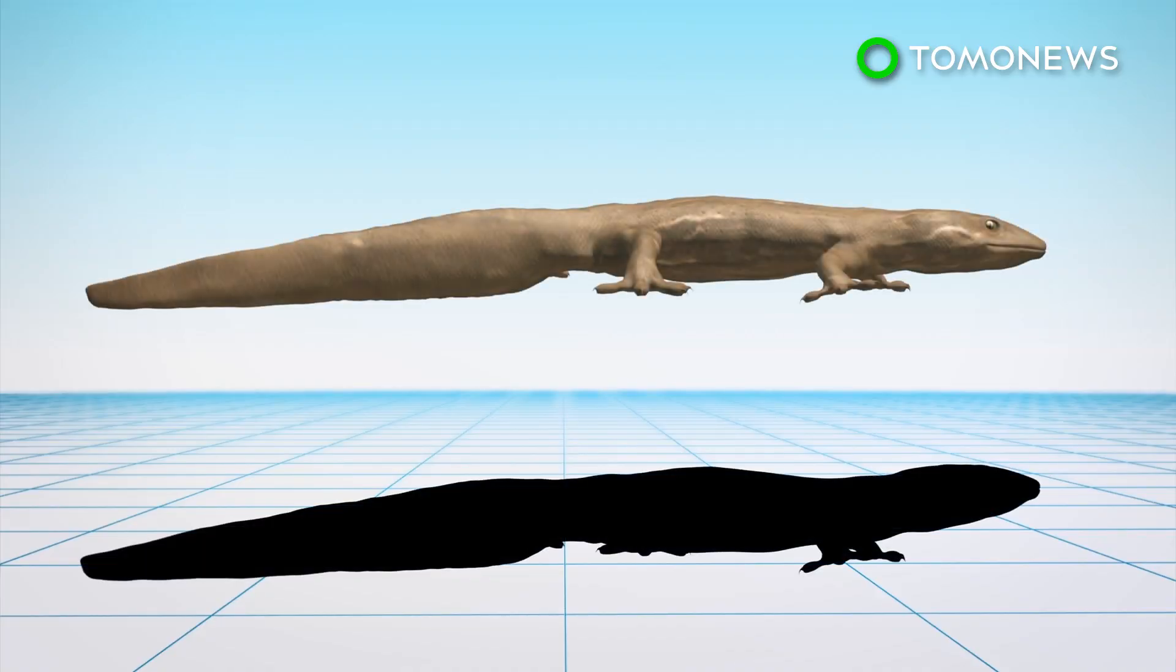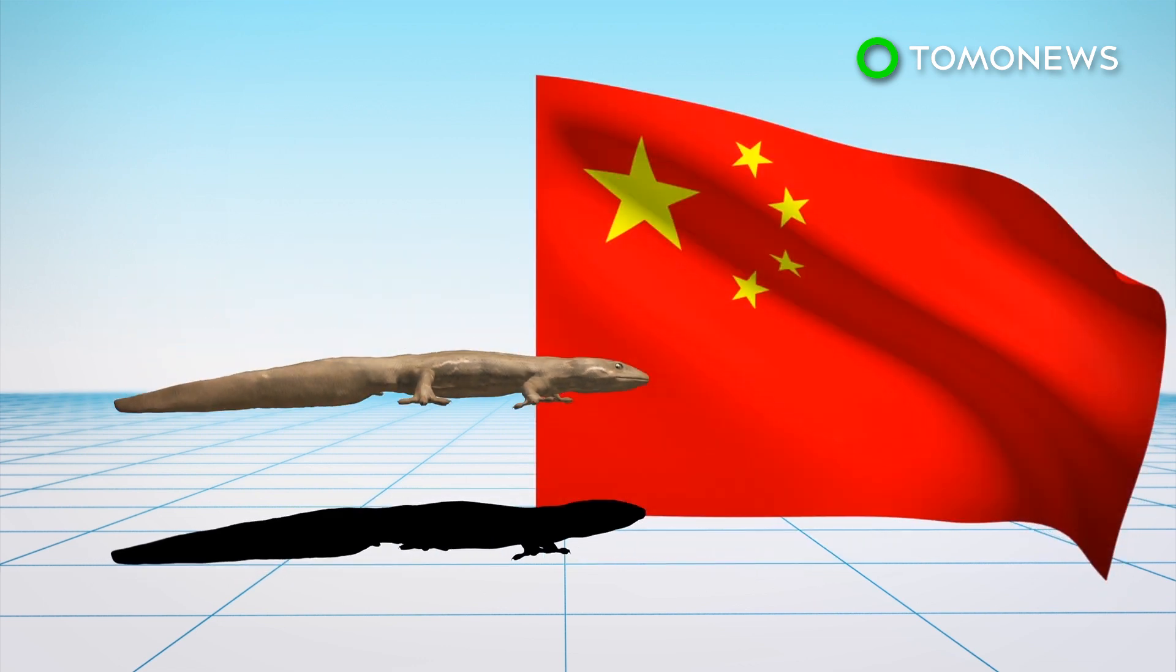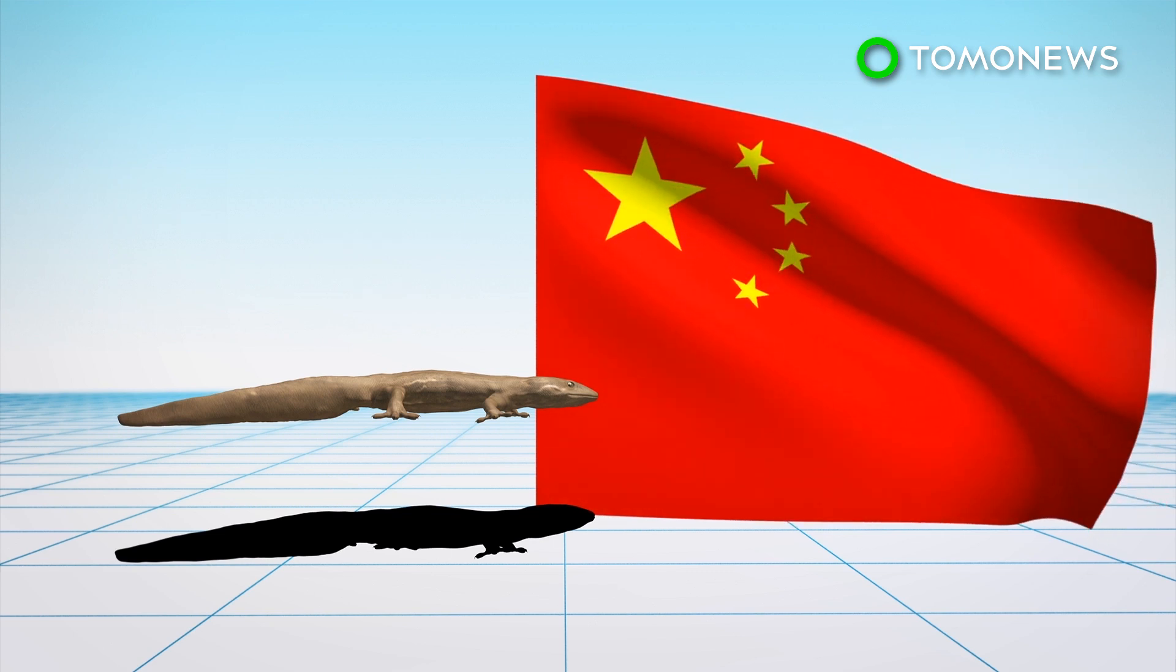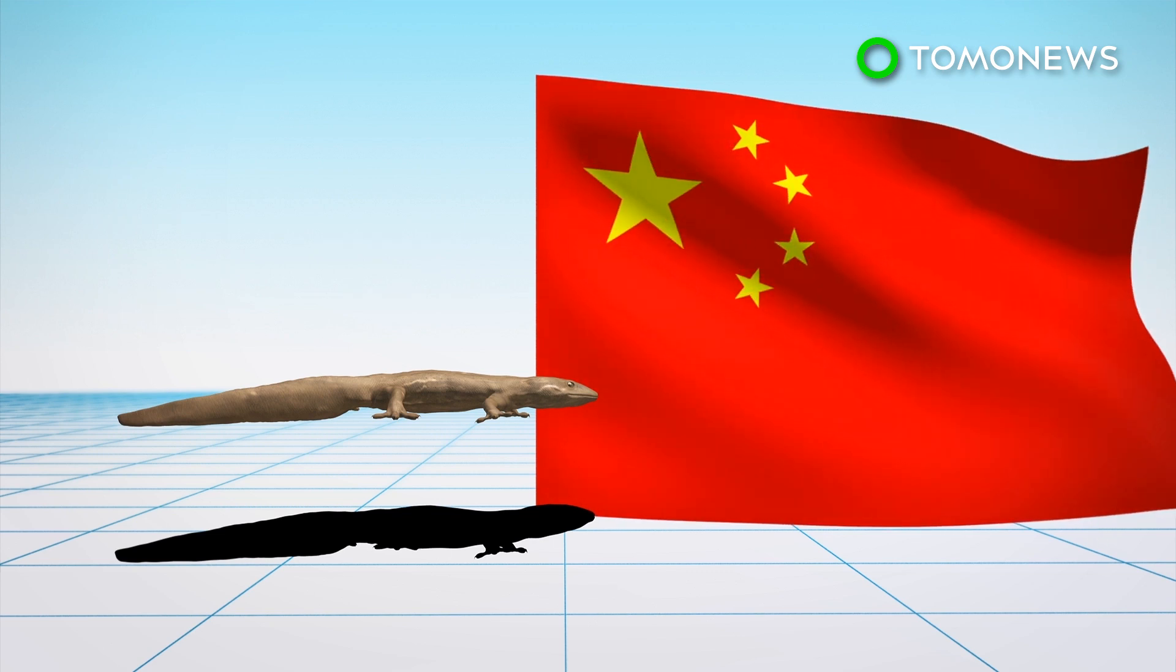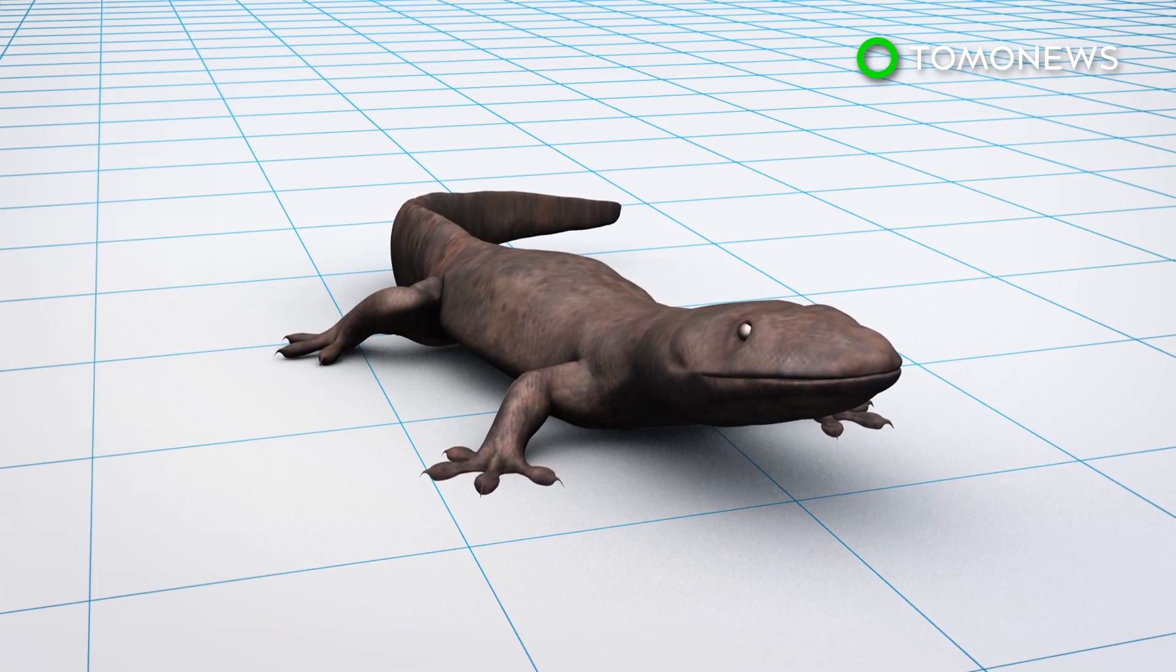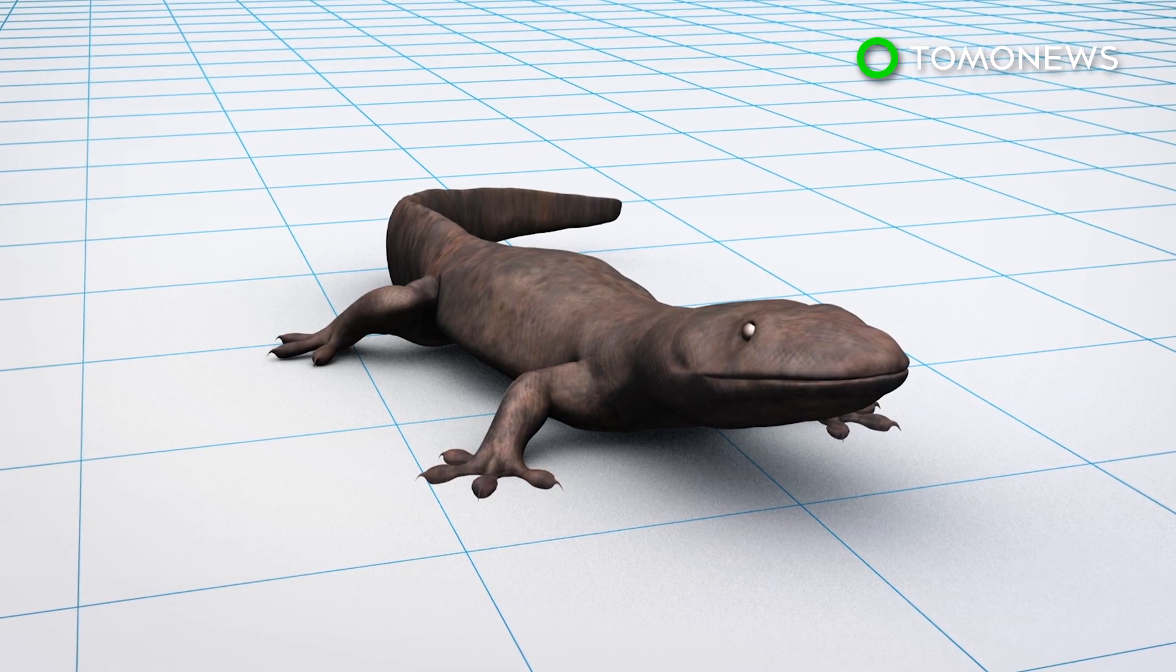Scientists used DNA taken from museum specimens collected in the early 20th century to identify two new salamander species from three river systems and mountain ranges in China. The Chinese giant salamanders were previously considered to be part of a single species known as Andreas Davidianus.